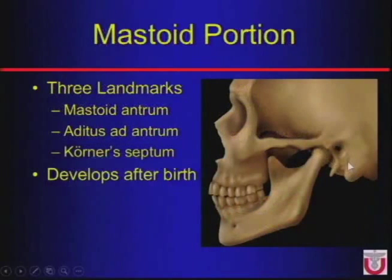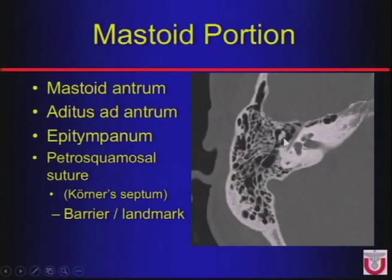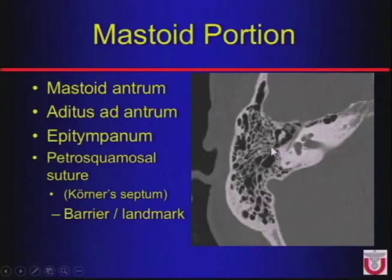Then we have the mastoid portion — the mastoid tip — which develops after birth and has some important anatomic landmarks on imaging. In the middle ear cavity we like to see an ice cream cone shape; we want to see a nice ice cream cone on every axial CT of the temporal bone. There's the opening right here — the aditus ad antrum, or opening to the cave — where it's narrowed, posterior to the ice cream cone. And then the mastoid antrum is...